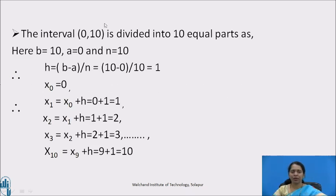If you do this type of division, the interval 0 to 10 is divided into 10 equal parts as here the last ordinate b is 10, first ordinate a is 0, and we have to divide this into 10 equal parts. So n equals 10. The formula for width h is b minus a upon n which becomes 10 minus 0 divided by 10, which is equal to 1.